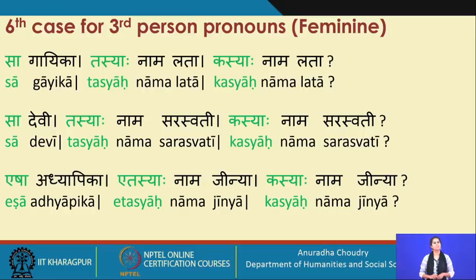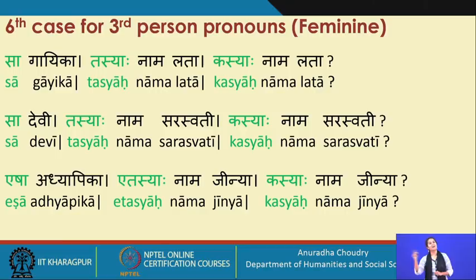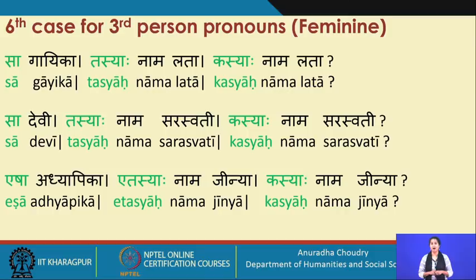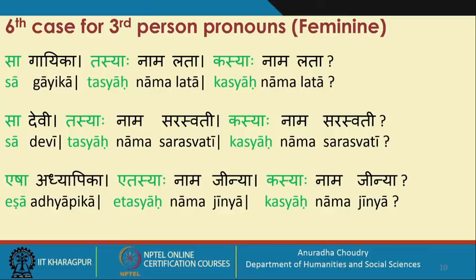When the lady is far away, it becomes tasyaah, in contrast to tasya for the masculine and neuter. For the word ending in e: saa devi, tasyaah naam Saraswati; kasyaah naam Saraswati. If she is near: eshaa adhyapika, etasyaah naam Jeenya; kasyaah naam Jeenya.